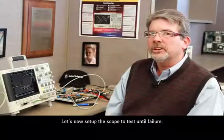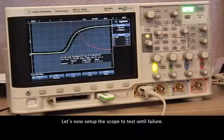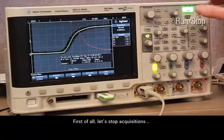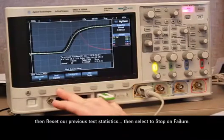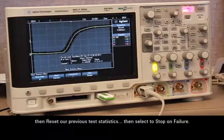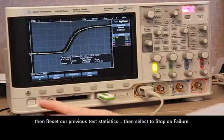Let's now set up the scope to test until failure. First of all, let's stop acquisitions, then reset our previous test statistics, then select to stop on failure.